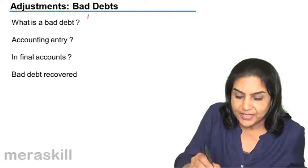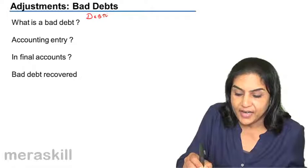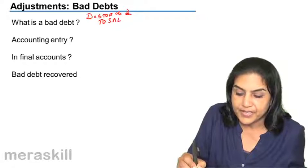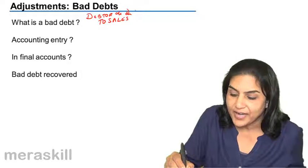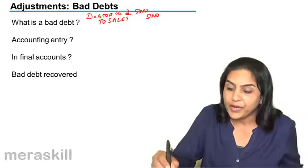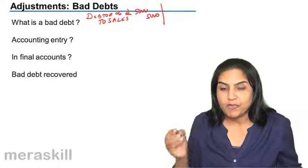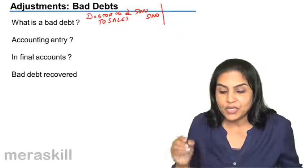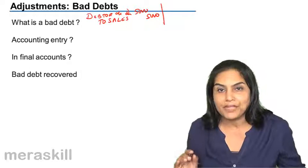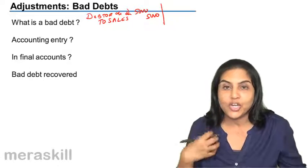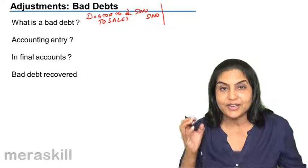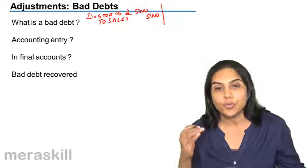Let us write all the entries. The first entry is debtor account debit to sales — let's say it's 5,000 rupees. Now, he will not pay this amount. Mr. X is the debtor and the amount due from him will not be paid. The money which cannot be recovered from him is called a bad debt. So, a bad debt is a debtor receivable which is not going to be received.